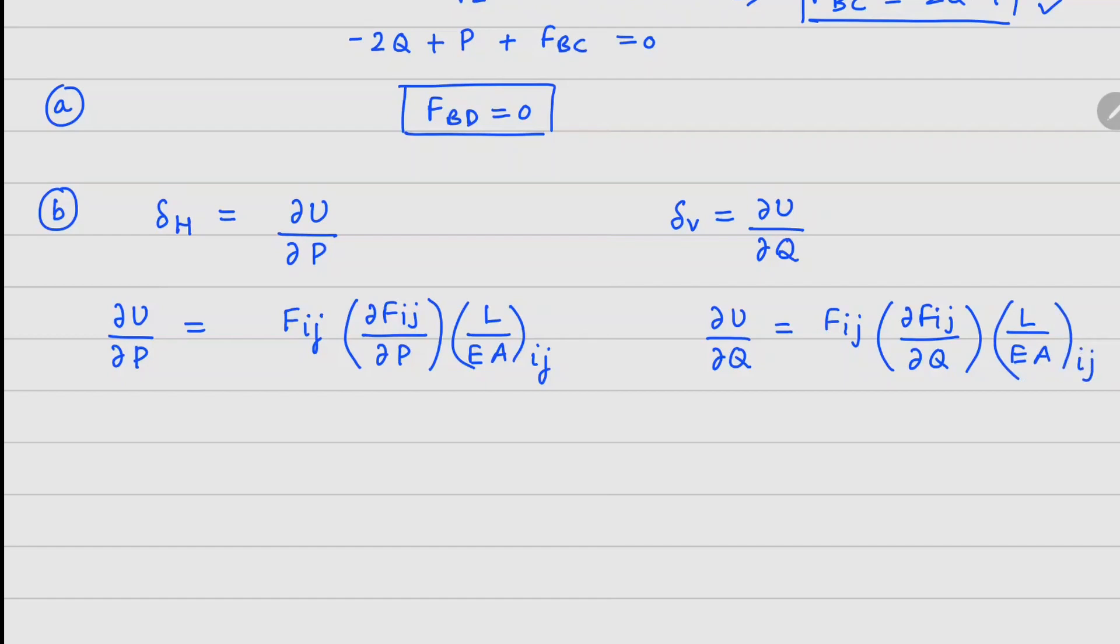Similarly, your dU over dQ can be written as member force Fij, derivative of Fij with respect to Q times L over EA of member ij. There are total three members here: DE member, BD member, and BC member. For these three members, we will pick up these values, multiply them together and write the final answer.